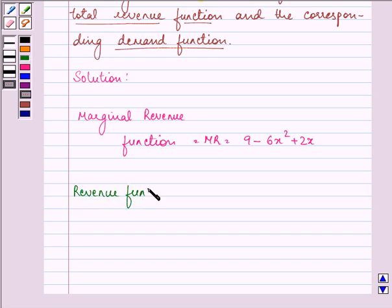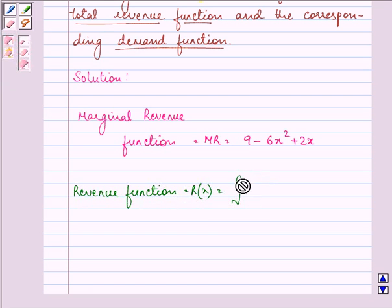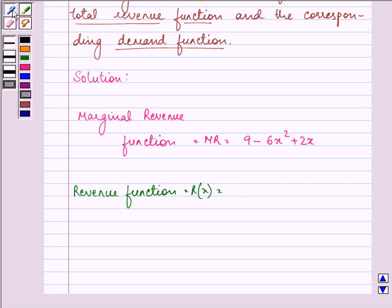The revenue function is found by integrating the marginal revenue function with respect to x and adding the constant of integration. That is R(x) = ∫(9 - 6x² + 2x)dx + C.